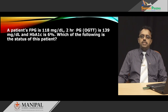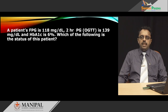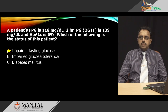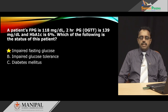Practice question 2: A patient has fasting plasma glucose of 118 mg/dL, 2-hour plasma glucose in an OGTT of 139 mg/dL, and HbA1c of 6 percent. What is the status of this patient: impaired fasting glucose, impaired glucose tolerance, or diabetes mellitus? The right answer is impaired fasting glucose — because the fasting glucose should be less than 100 mg/dL, placing this patient in the impaired fasting glucose range (100–125). The 2-hour plasma glucose of 139 mg/dL is within normal range, and HbA1c of 6 percent does not indicate diabetes.